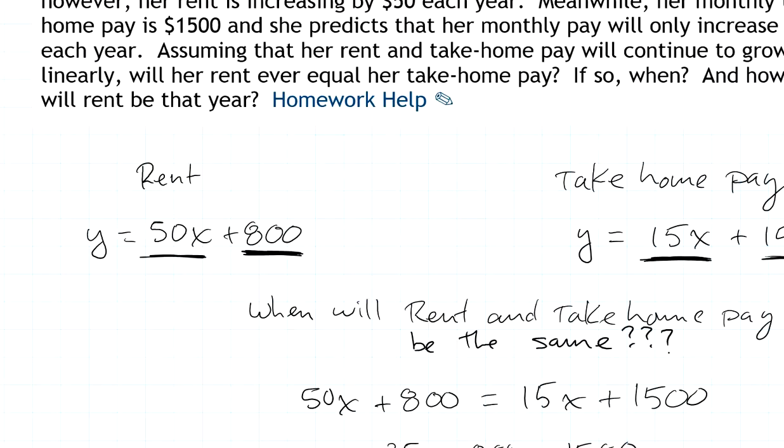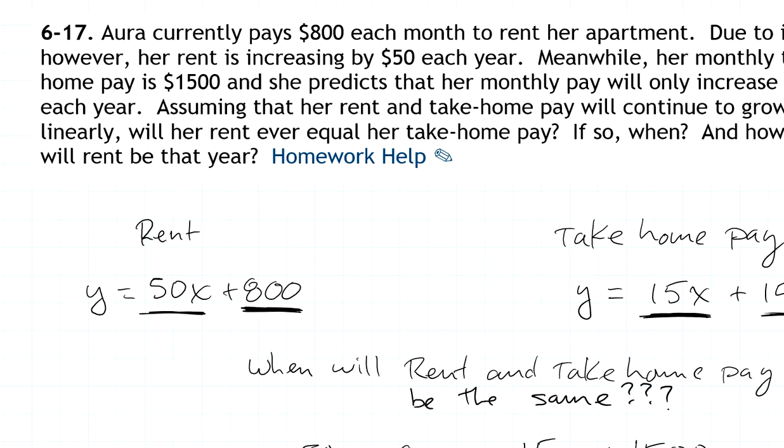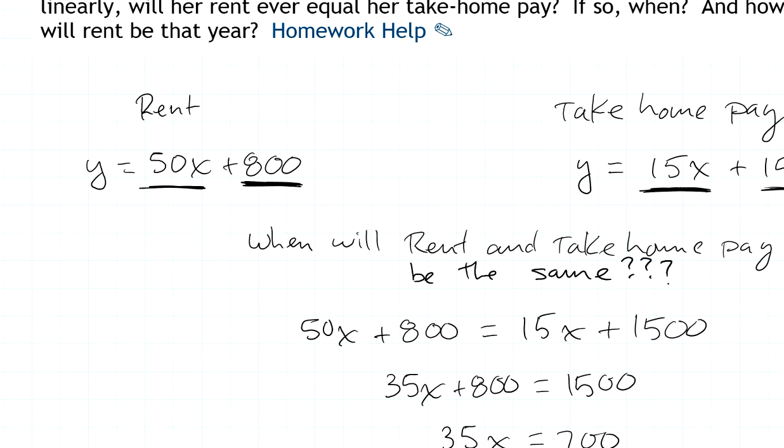So this problem says assuming that her rent and take-home pay will continue to grow linearly will her rent ever equal her take-home pay if so when. So we want to know when these two equations, when the rent and the take-home pay, are going to be the same.